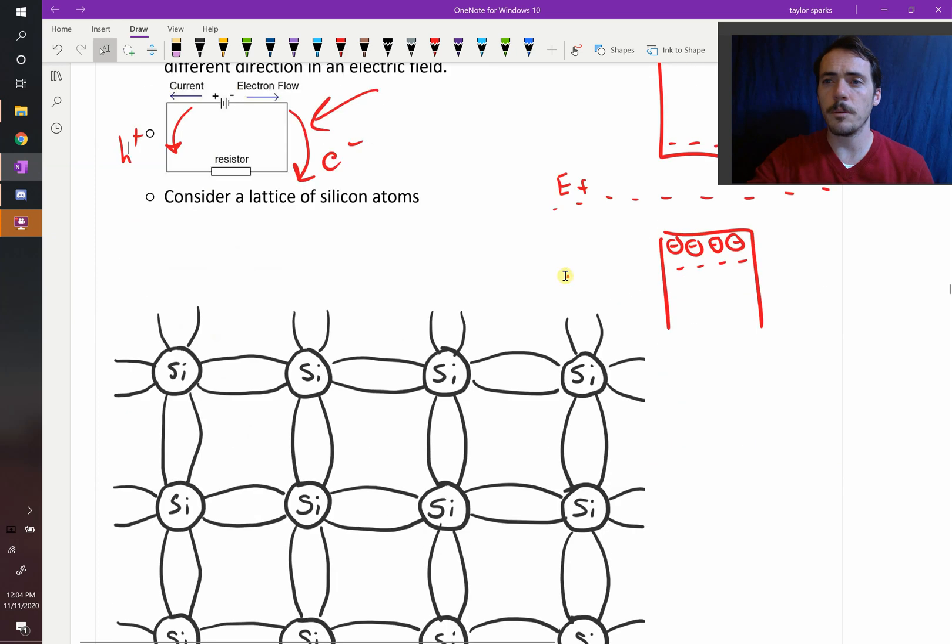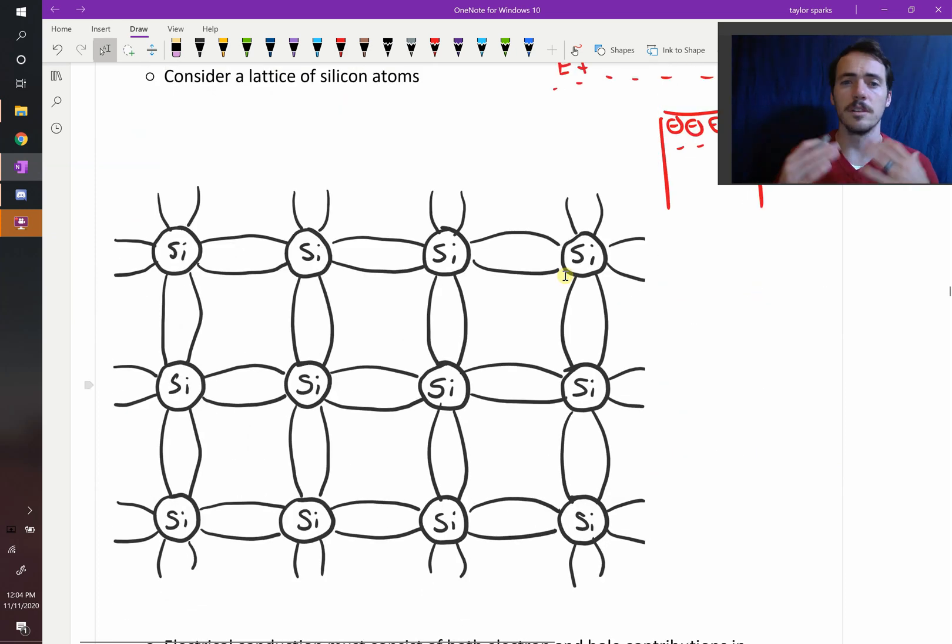I think it's useful to think about intrinsic semiconductors by picturing this lattice of silicon. Let's imagine we have pure silicon. We know that silicon is bonded to four other silicons and it is not flat sheets. I'm showing it as a two-dimensional plane here, but we know that this is actually a three-dimensional diamond cubic lattice.